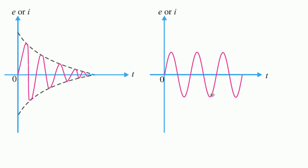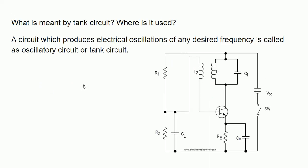For practical and reliable applications, electronic circuits mostly need undamped oscillations. The definition of a tank circuit is: the circuit which produces electrical oscillations of any desired frequency. If you set the frequency, it has to produce the continuous oscillations — that is called an oscillatory circuit or tank circuit.